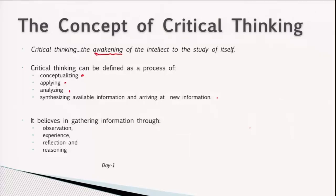To carry out this process, you need information, and for insight you need more information. That is how we have to gather information. And how do we gather information? We gather information through observation, through experience, through reflection, and finally through reasoning. I would like you to think of it this way — observation, experience, reflection, and reasoning are not very different processes. They are in fact parts of the same process. Sometimes they are simultaneous, sometimes they overlap. They are just different ways of looking at information.